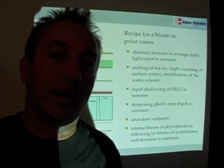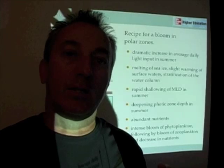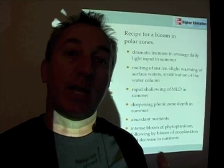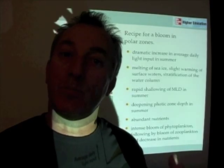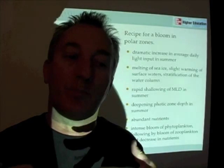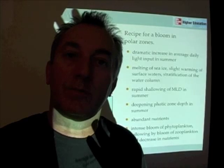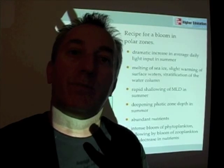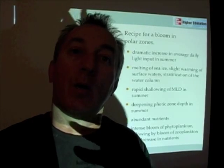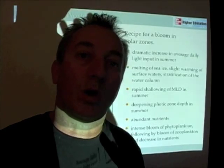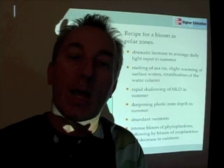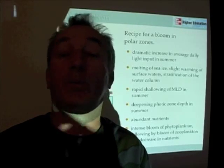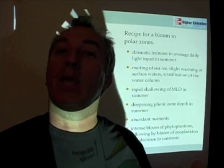It begins to melt the sea ice. As you recall from chapter seven, as sea ice melts, it begins to release some fresh water. That release of fresh water plus the warming rapidly stratifies the water column, because fresh water sits on top.